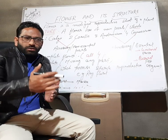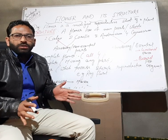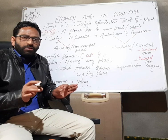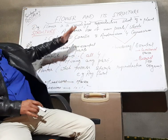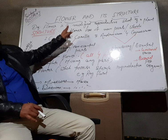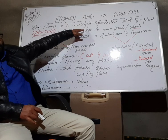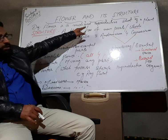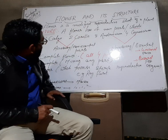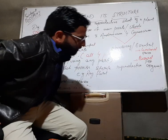We can get a plant from the root, from the stem, from the leaf due to vegetative propagation, but that is asexual reproduction — that is not sexual. So for sexual reproduction, the flower is necessary. So the flower is a modified reproductive shoot.